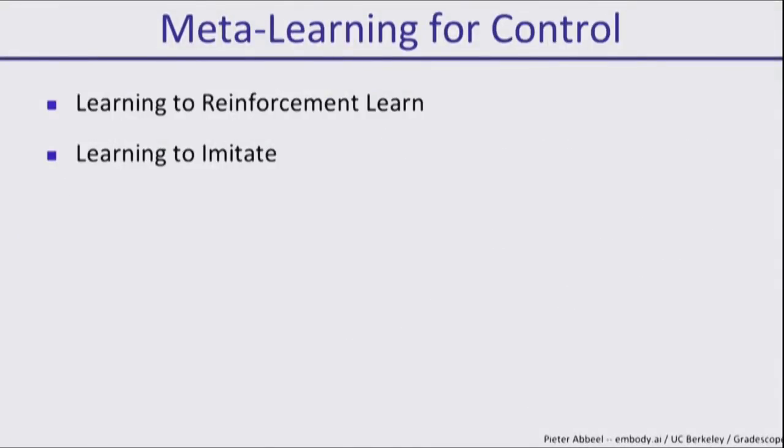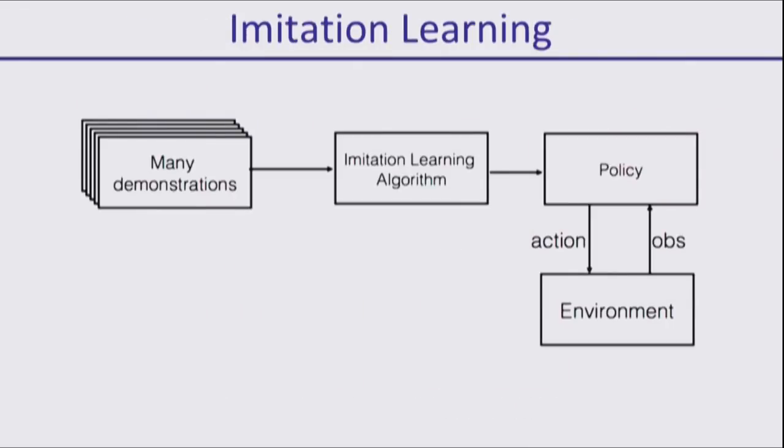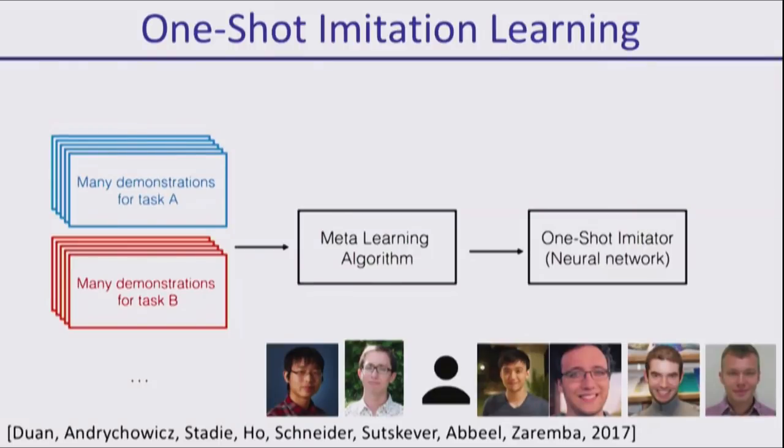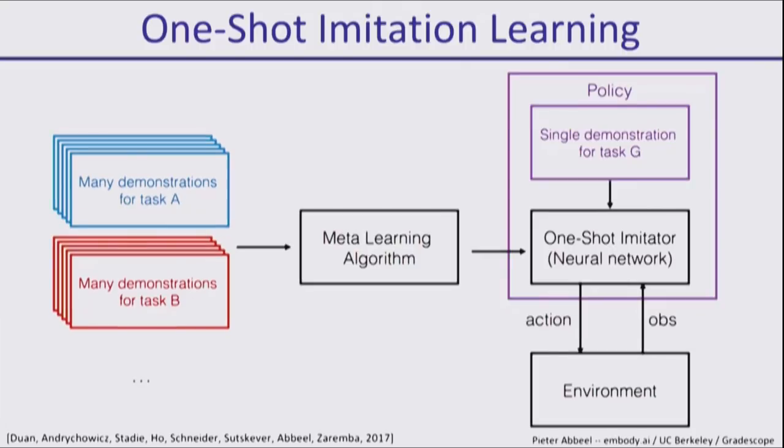We can't just reinforce learn, we can also learn to imitate. Imitation learning has been quite successful in many ways, but typically this canonical paradigm is used where you imitation learn for each task separately. Maybe assembling a chair, then assembling a table, and so forth. Meta-learning would be the notion where you actually see a lot of demonstrations and then learn something that can, in the future, imitate from one example. You give one example of a new task, it immediately learns how to do it.